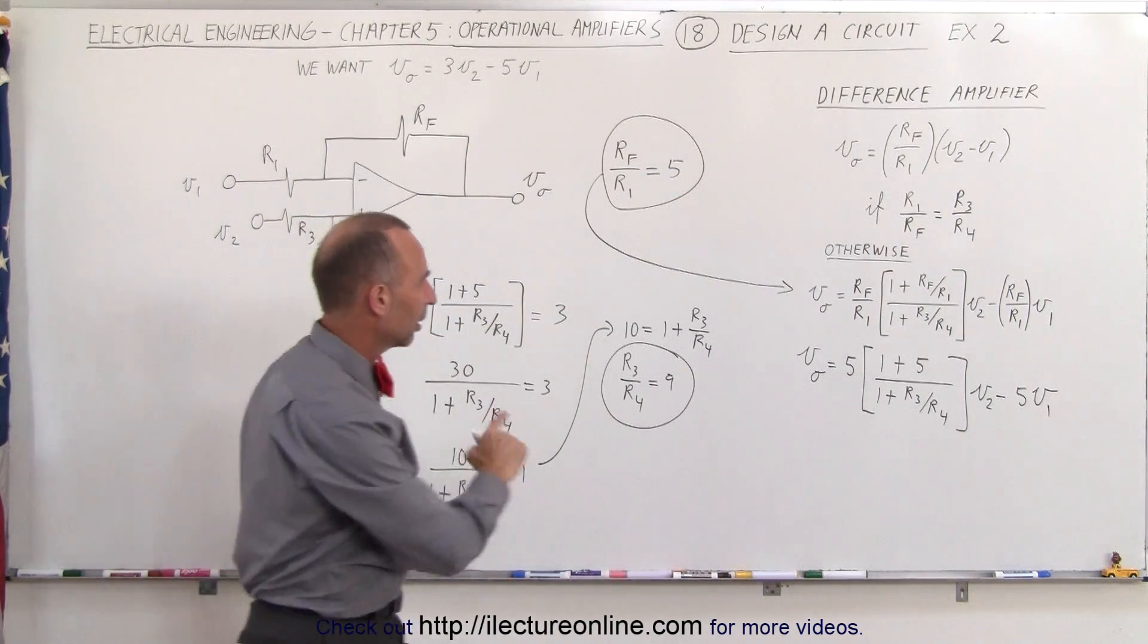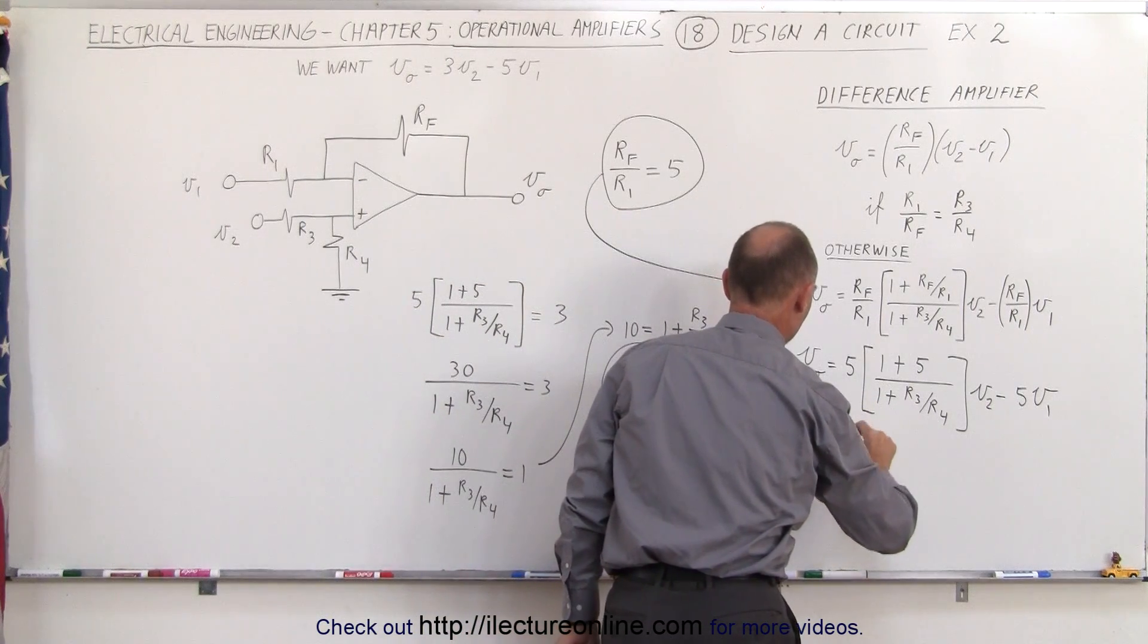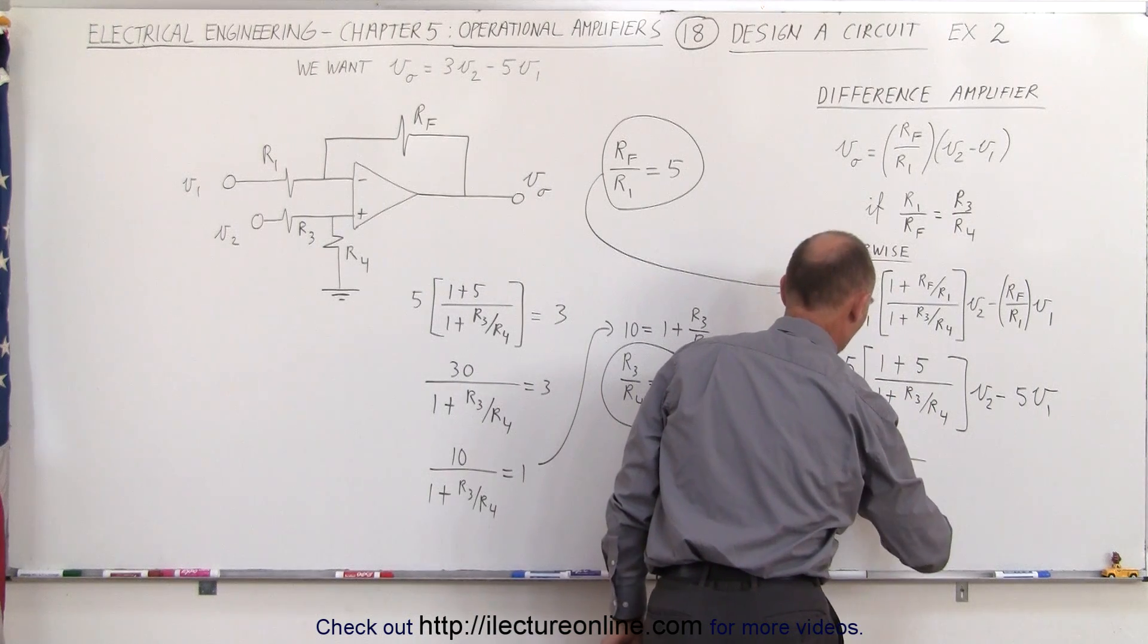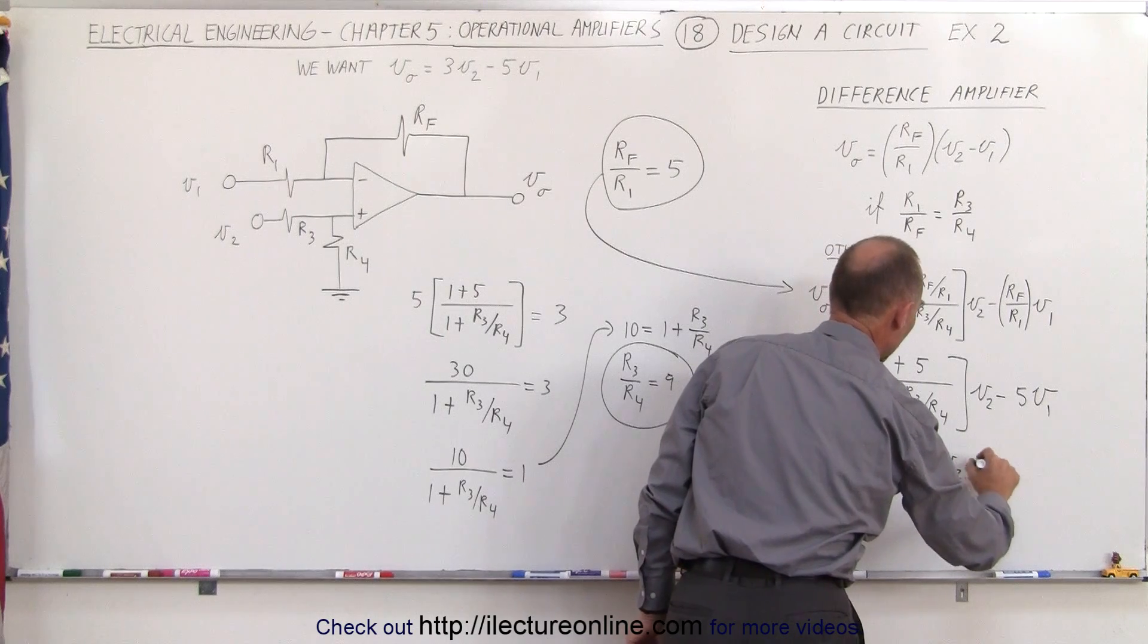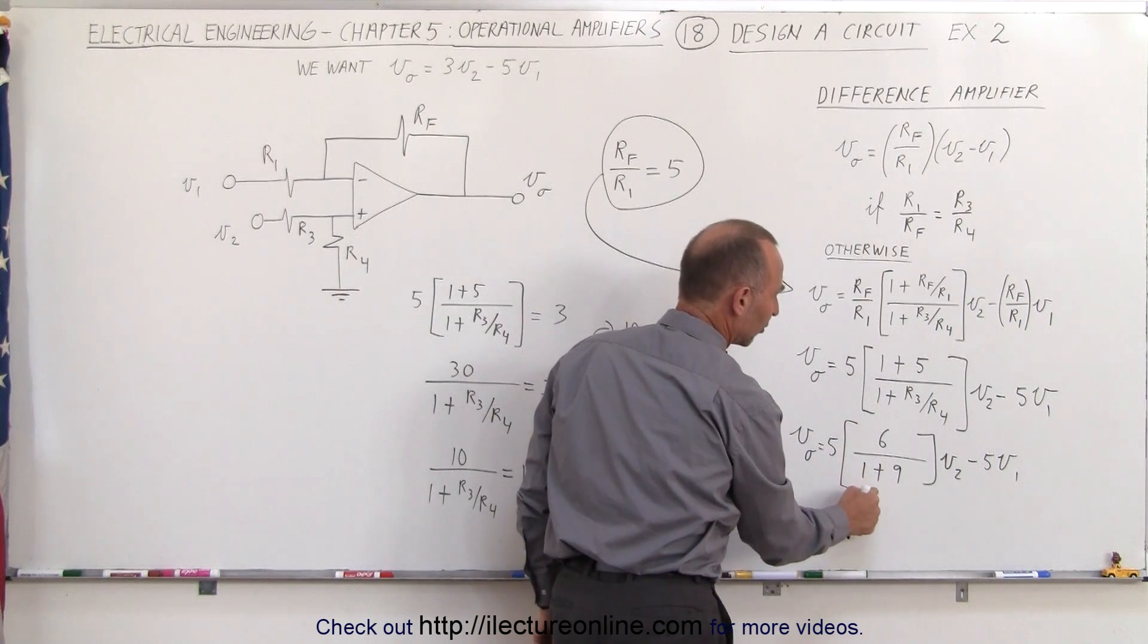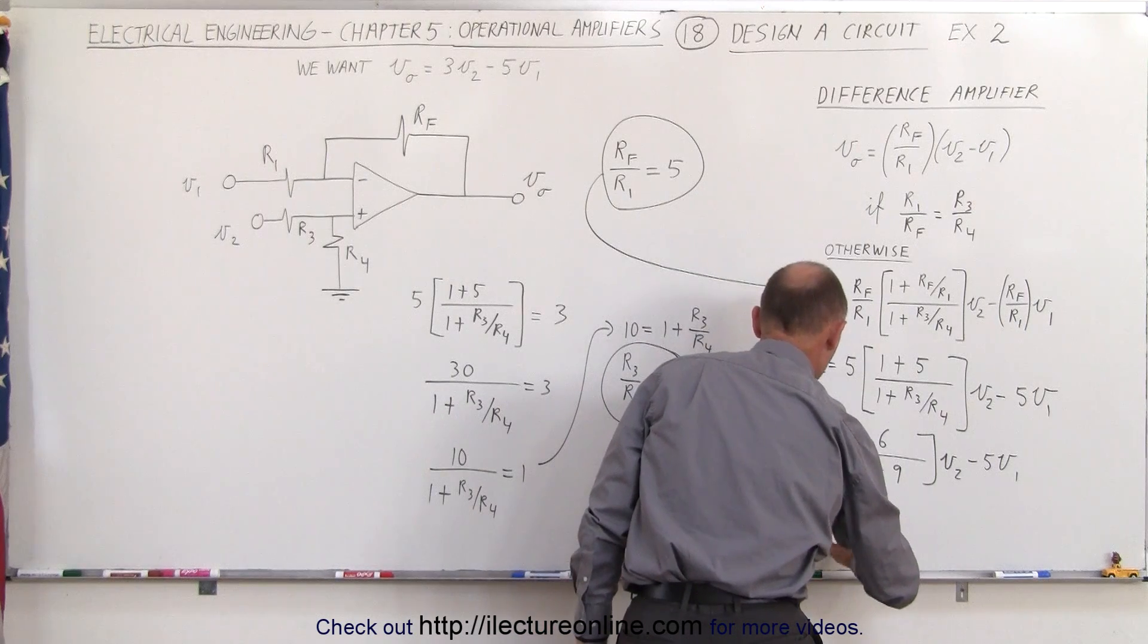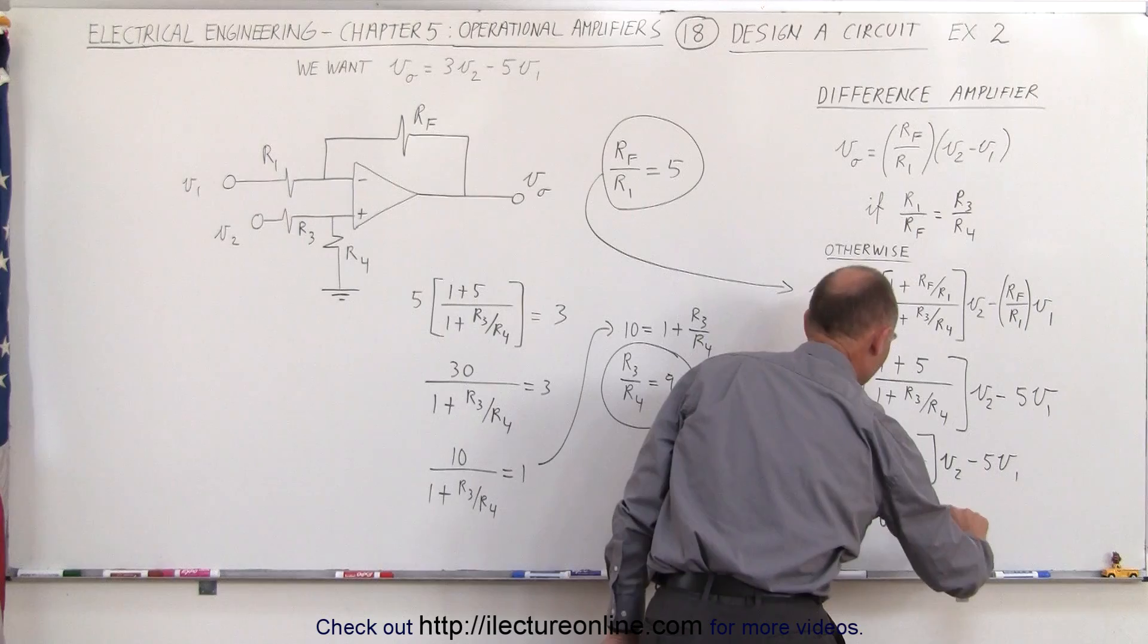Notice why that would work. If I plug that in here I'll get V output is equal to 5 times 1 plus 5 which is 6 divided by 1 plus 9 times V2 minus 5 times V1. Notice 6 times 5 is 30 divided by 1 plus 9 which is 10. 30 divided by 10 is 3. So this ends up being V output equals 3 V2 minus 5 V1.